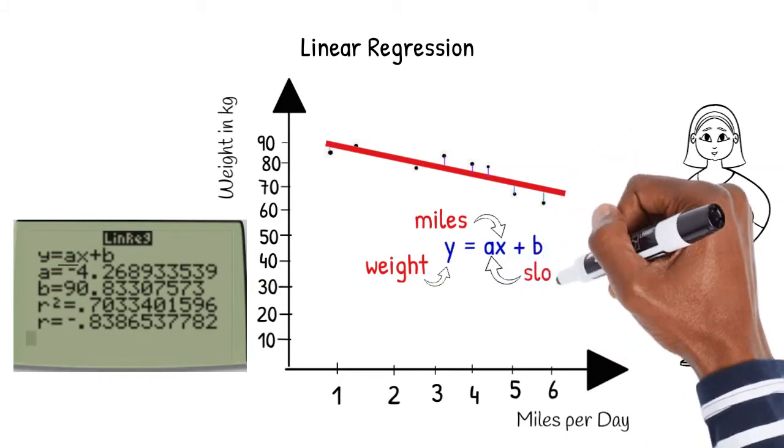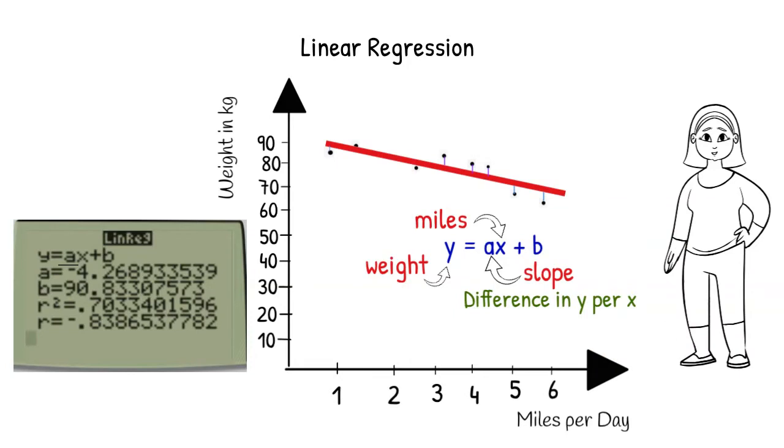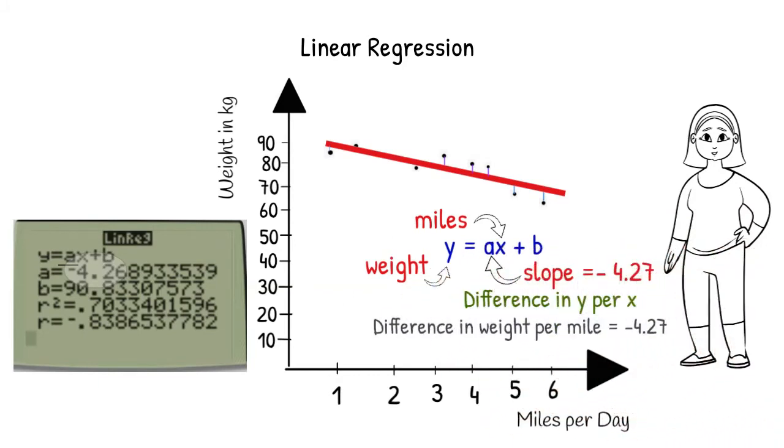A is the slope of our line. Slope tells us the difference in y per x. In this example, the slope is negative 4.27. The difference in weight per mile is negative 4.27. In other words, for every additional mile the women in our study walk per day, their weight is 4.27 kilograms less.